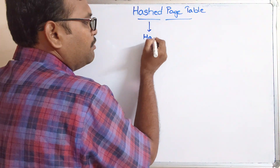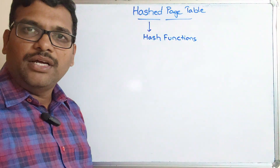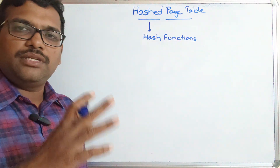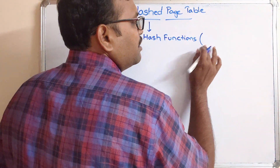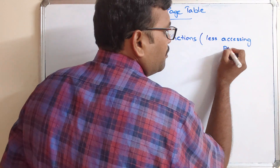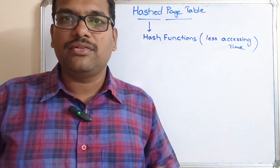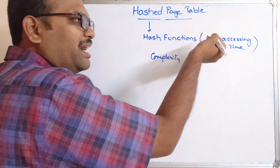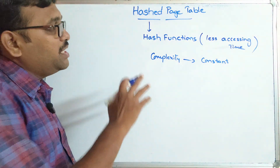In this technique, as the name indicates, we use a hash function. We have studied many hash functions in data structures — division method, folding method, and others. I will post the link to those hash functions in the description. The reason we use hash functions is that they give less access time. The complexity of using a hash function to retrieve data is always constant, which is very efficient.